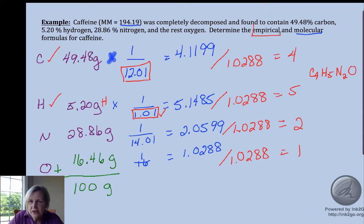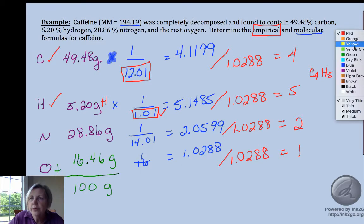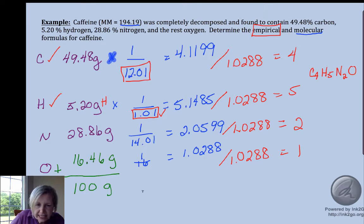So that means our empirical formula is C4H5N2O. Now we did this part. It asked for the empirical formula. Now we need to get the molecular formula.